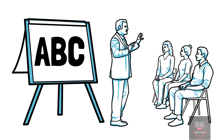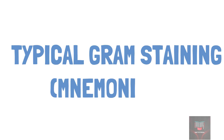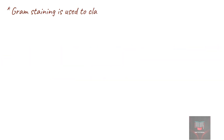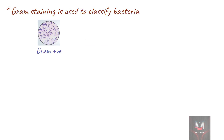Welcome to ABC tutorial. Today we will talk about the mnemonics to remember bacteria with atypical gram staining. Gram staining is a common technique used to differentiate groups of bacteria based on their different cell wall constituents. Bacteria are classified as gram positive or gram negative based on the ability to retain the gram stain or not.